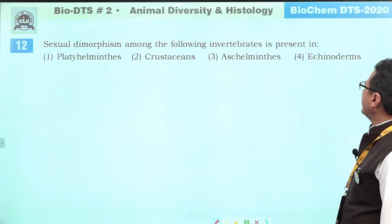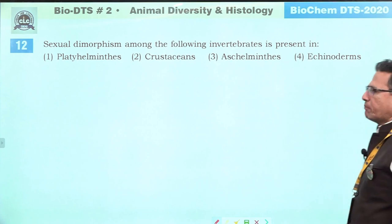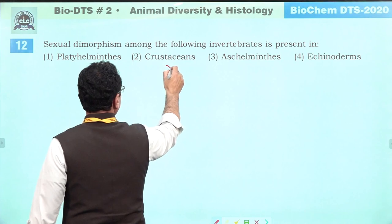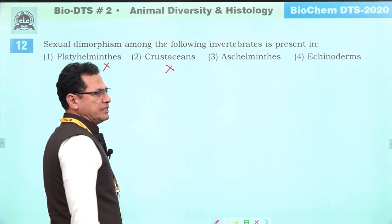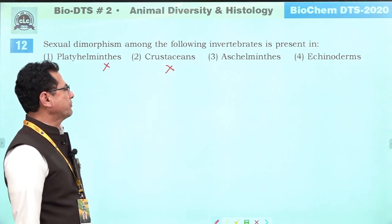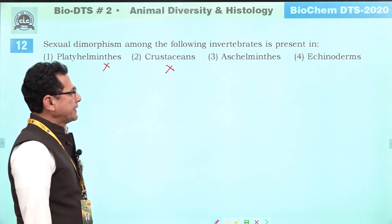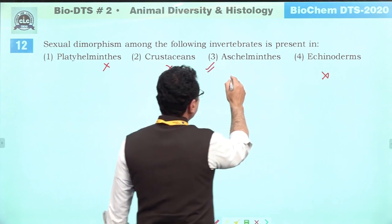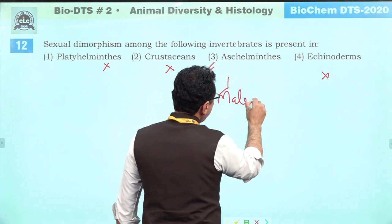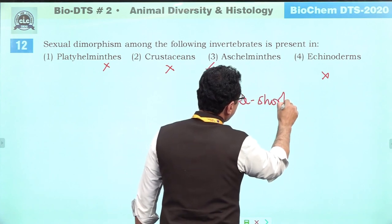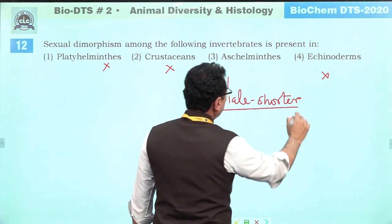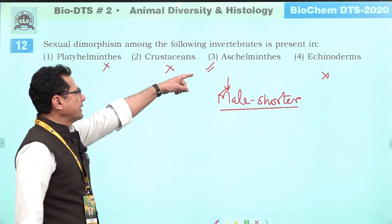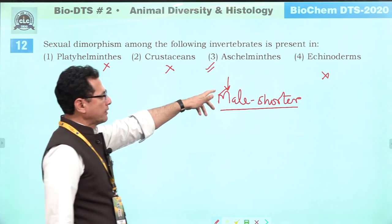Sexual dimorphism among invertebrates is present in Aschelminthes. In crustaceans, sexual dimorphism is not well-marked — we cannot differentiate sex just by viewing morphological features. In Aschelminthes, the male is shorter compared to the female — this is a unique feature. So this is the right answer. The male is shorter than the female, and the posterior end is curved.